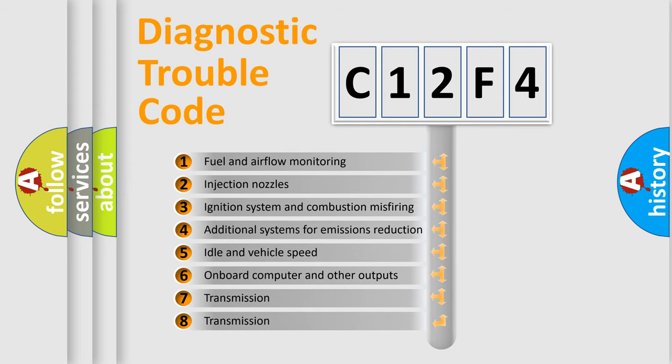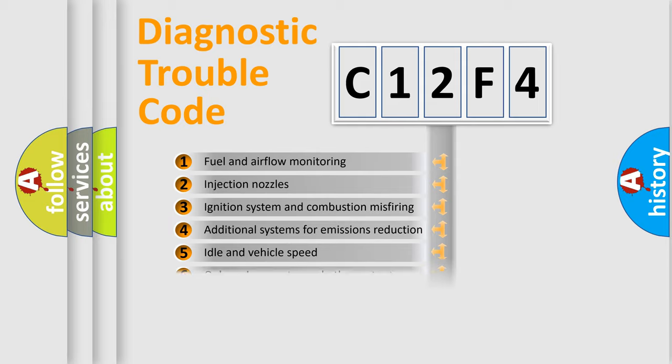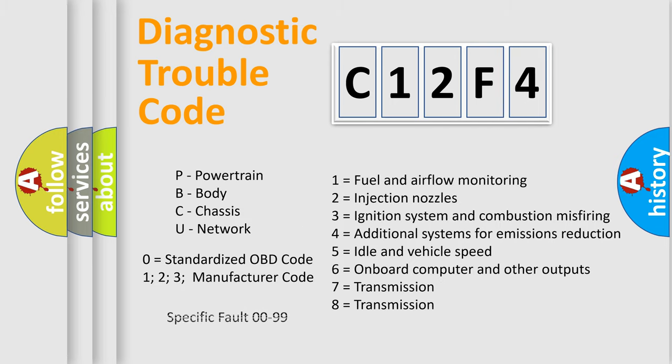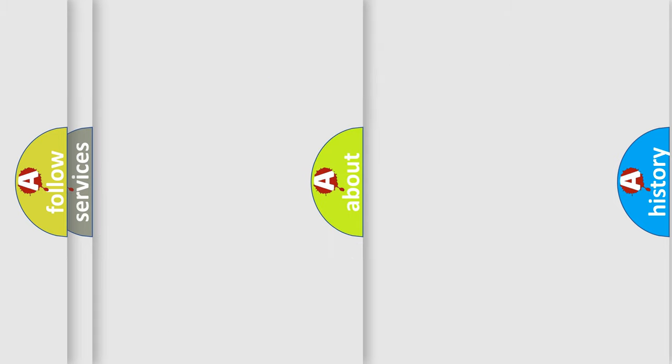The third character specifies a subset of errors. The distribution shown is valid only for the standardized DTC code. Only the last two characters define the specific fault of the group. Let's not forget that such a division is valid only if the other character code is expressed by the number zero.